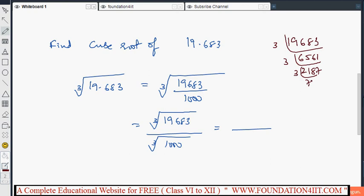3 table you can continue till down. 243, again 3 table, 81. 27, and 9, and 3, 3.